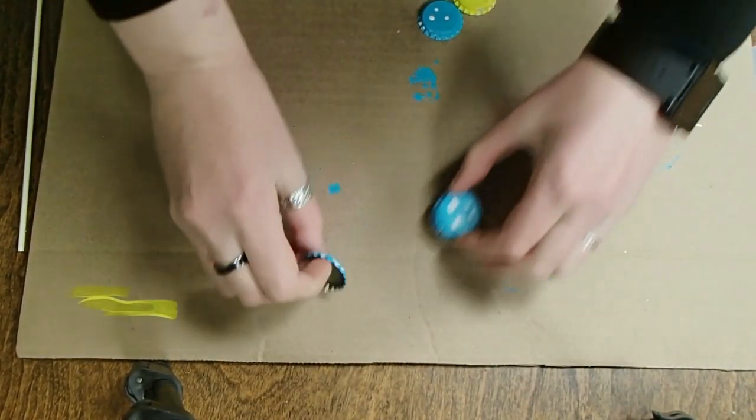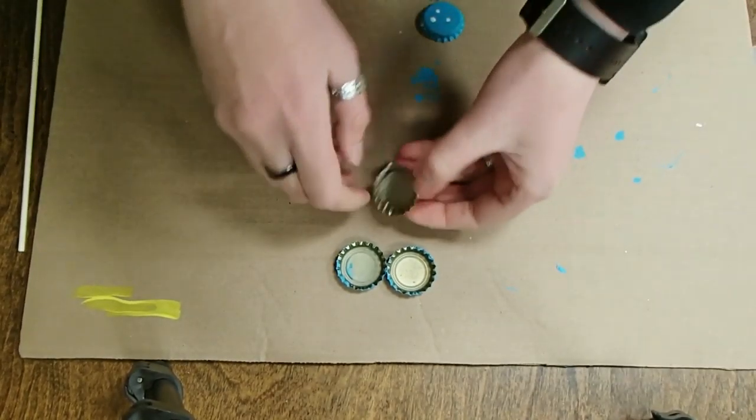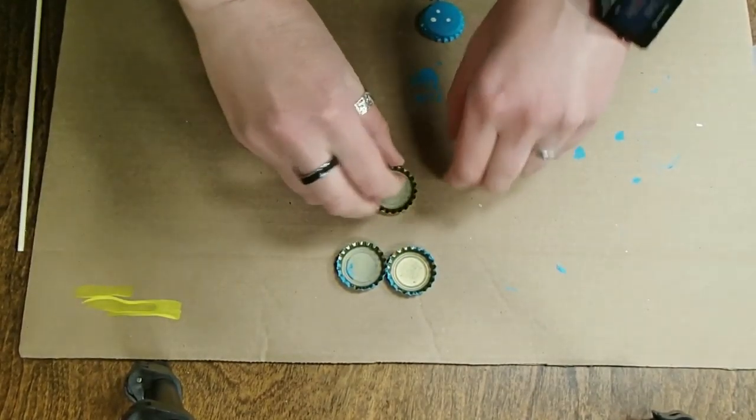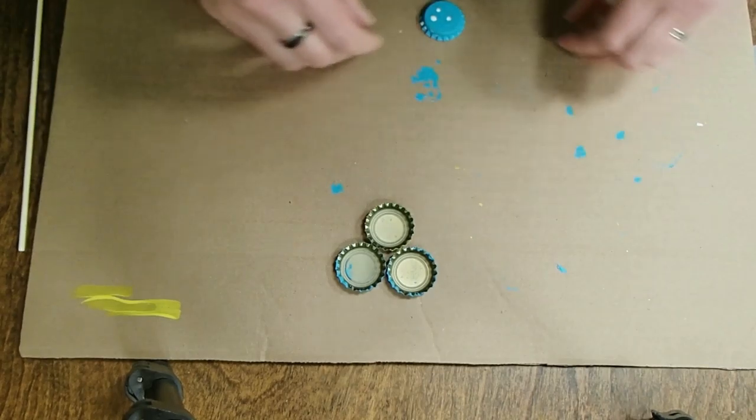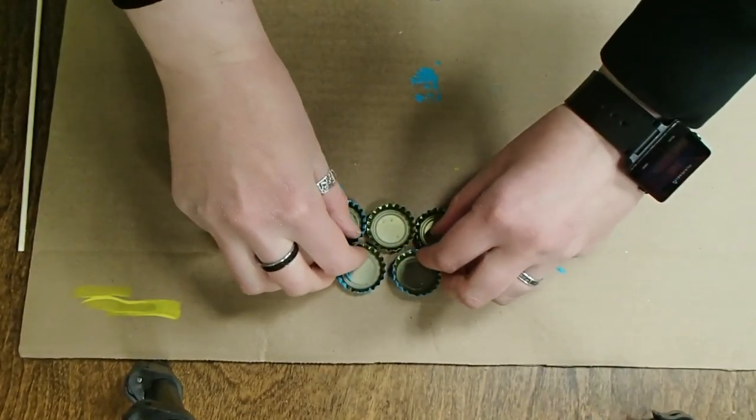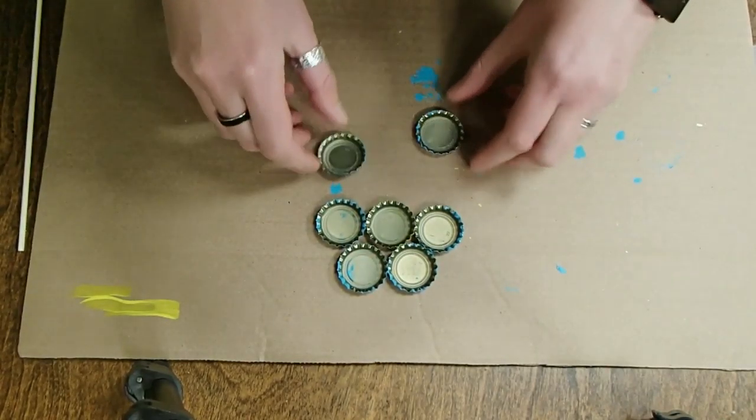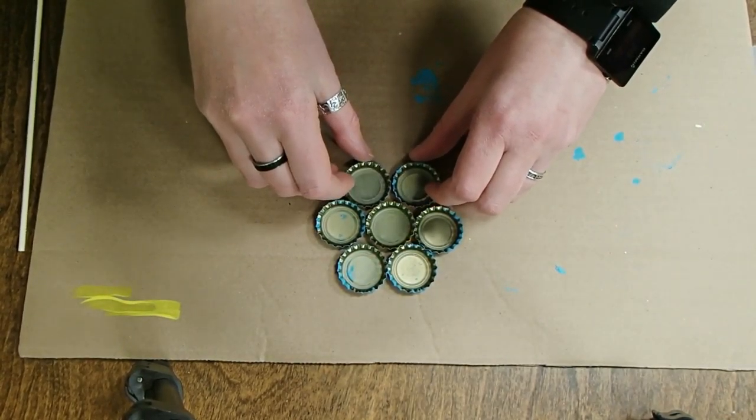Okay, so we have our bottle caps. We're going to arrange them in a little flower formation. So you make sure you have the yellow one in the middle and then you'll just put the caps around. You want them to be touching.